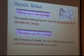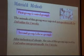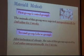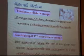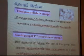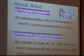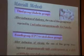The second group was the obese group; after induction of obesity, the rats of this group were injected intraperitoneally for 5 weeks. The third group was the diabetic group; after induction of diabetes, the rats of this group were injected intraperitoneally for 5 weeks.